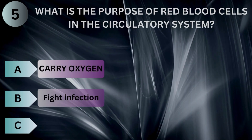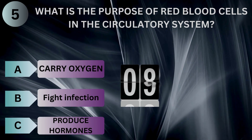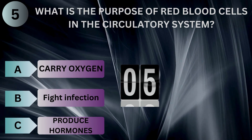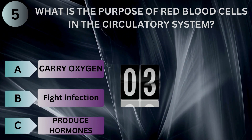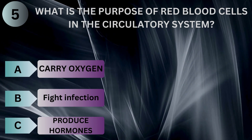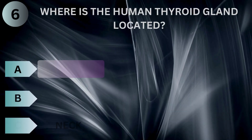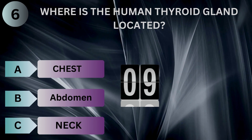What is the purpose of red blood cells in the circulatory system? Where is the human thyroid gland located?